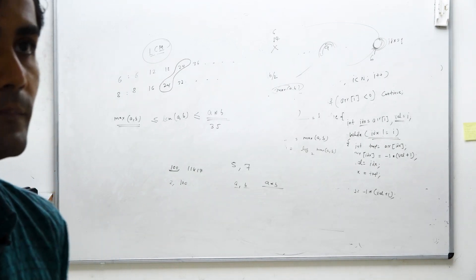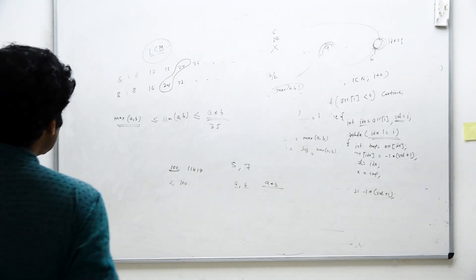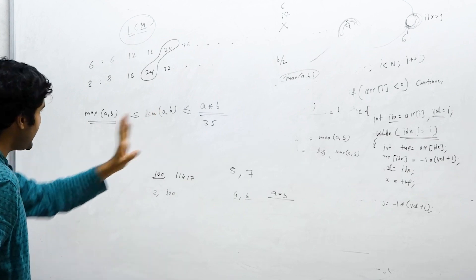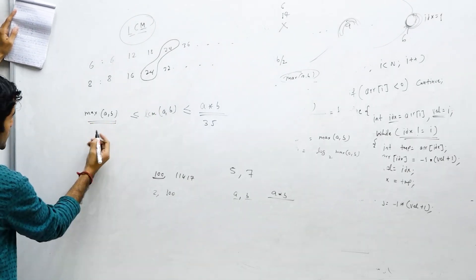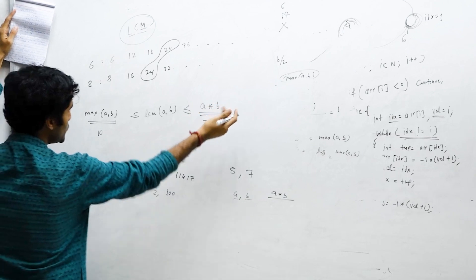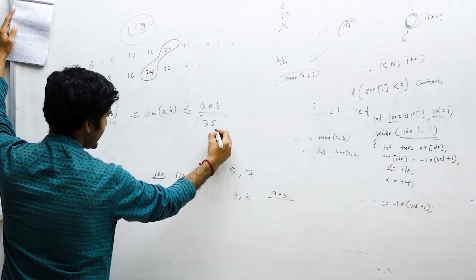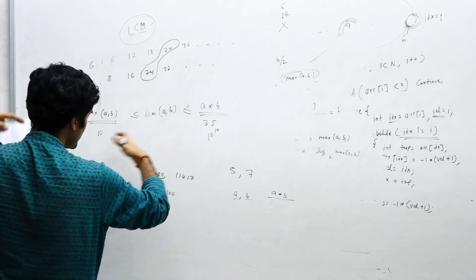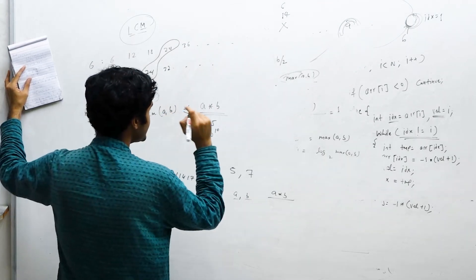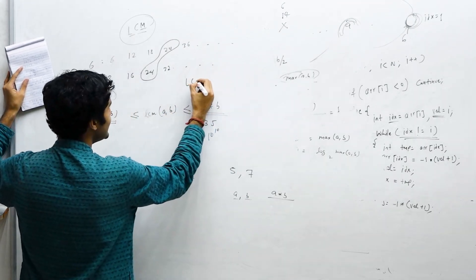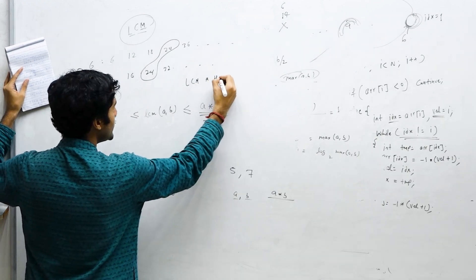But this will again be an expensive approach, because max of the two numbers can be as low as 10, and a into b can be as great as 10 raised to the power 10. So you will have too many iterations to run, which is not a great job.